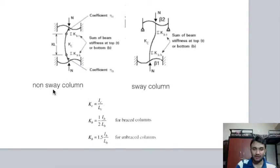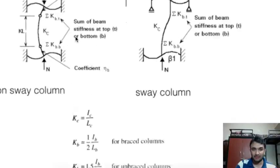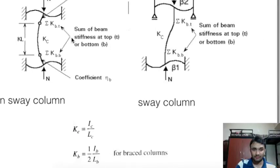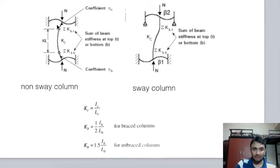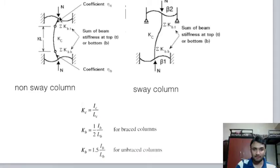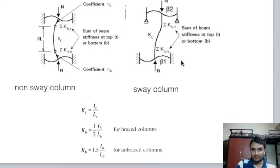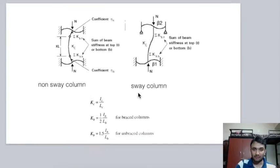Both non-sway and sway column figures are shown here. In the non-sway column, the stiffness of the upper and lower beams differs from the sway case. We have to consider the sum of stiffnesses at the top and bottom joints, and this affects the β1 and β2 constants.